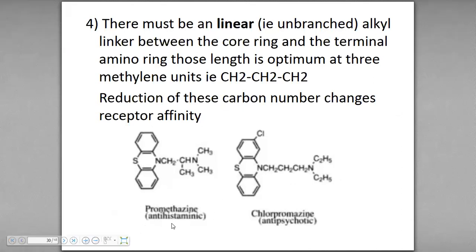Promethazine, which is anti-histaminic, and chlorpromazine, which is anti-psychotic, are structurally similar but differ in their side chain. A reduction of carbon chain length from 3 to 2 changes the receptor affinity, which is why promethazine with a 2-carbon chain shows different activity.